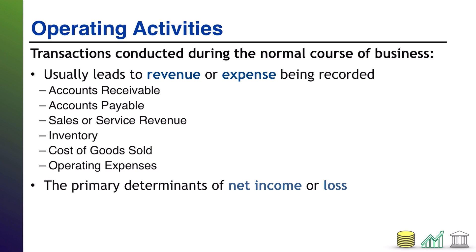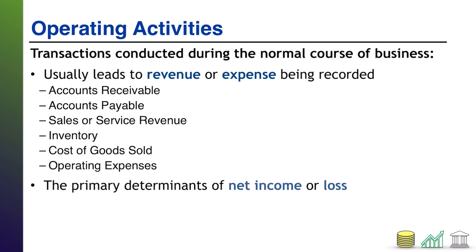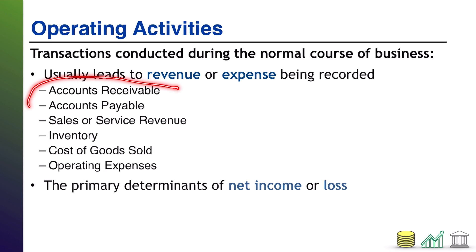Last up, operating activities. Operating activities are kind of the catch-all, and you're going to see very broad definitions here. They are transactions conducted during the normal course of business. A way to narrow this down is: things that usually lead to revenues or expenses being recorded — transactions with your customers or suppliers — which result in things like accounts receivable and payable, sales and service revenue, cost of goods sold, and so forth. Things that lead to revenues or expenses tend to be operating activities.